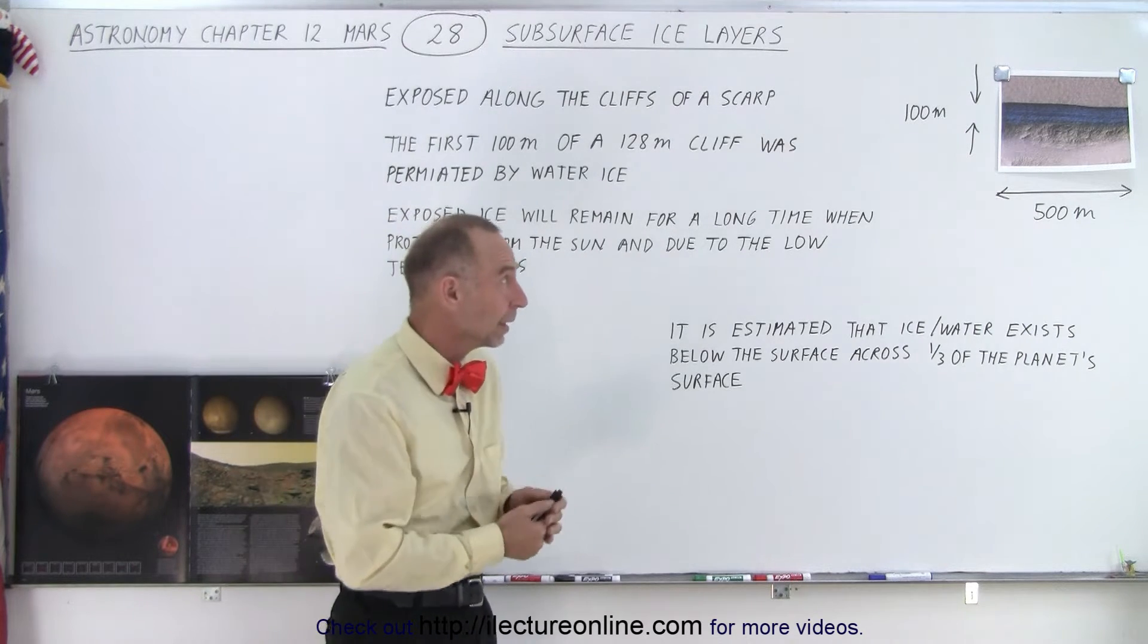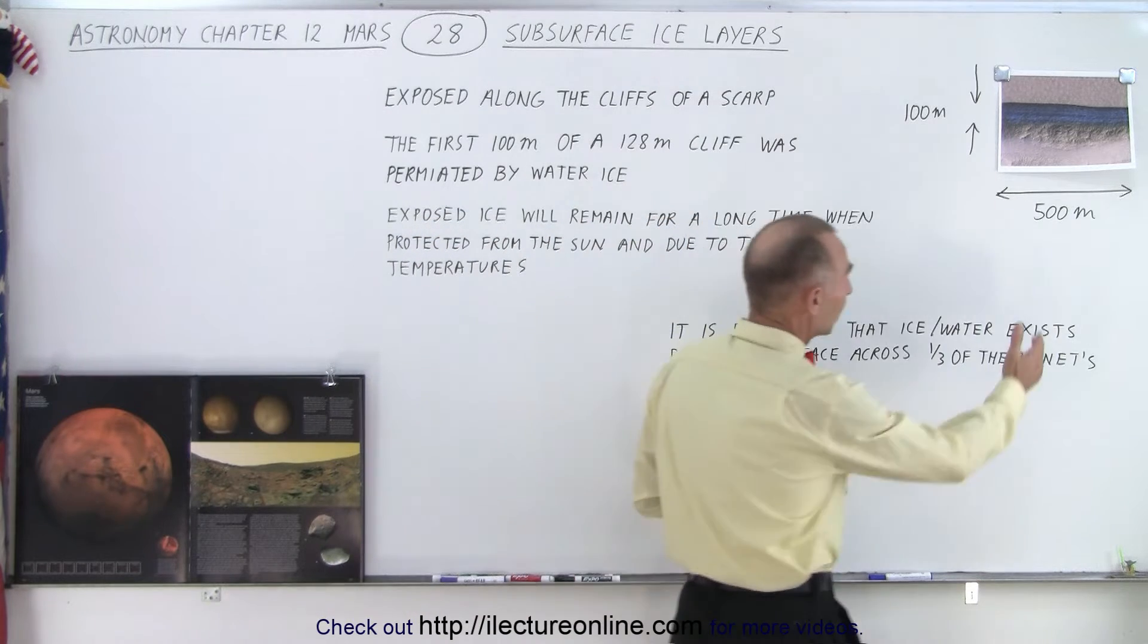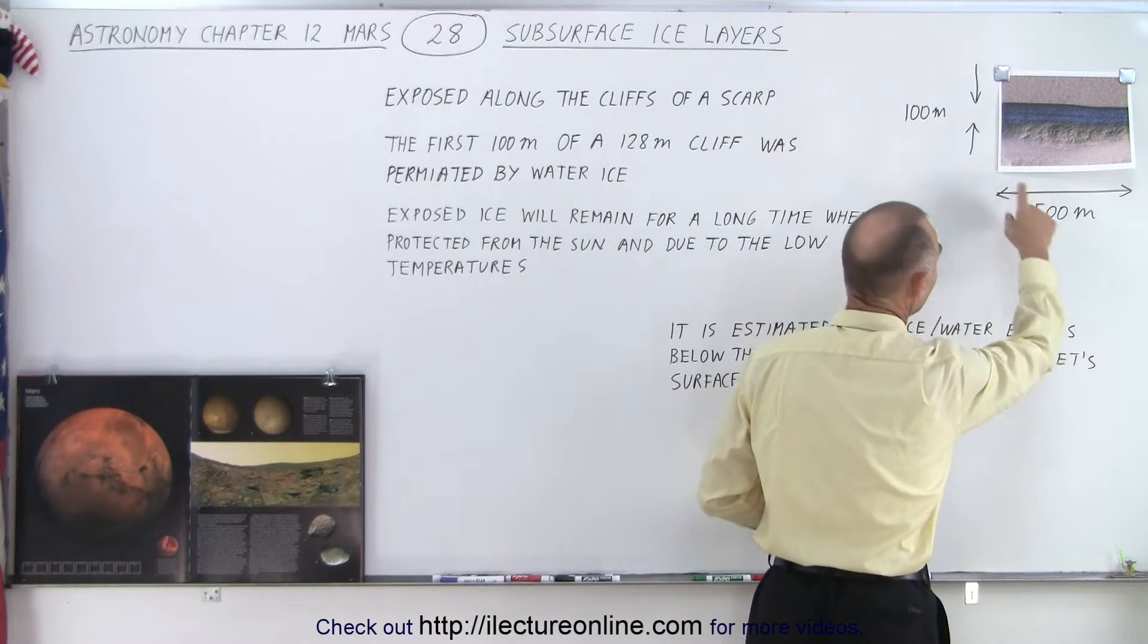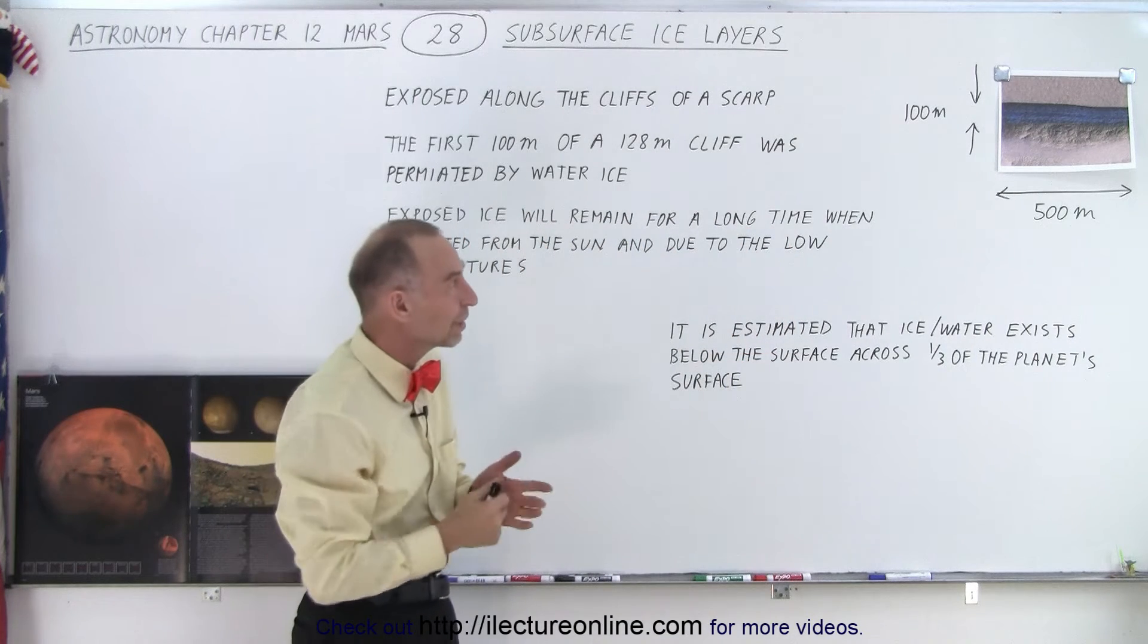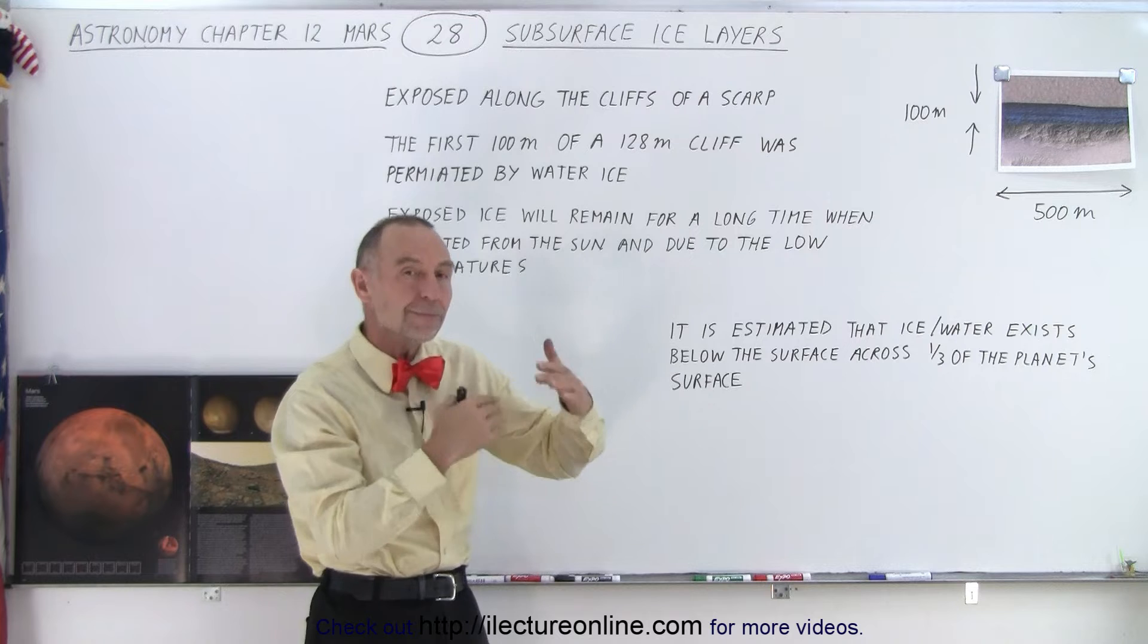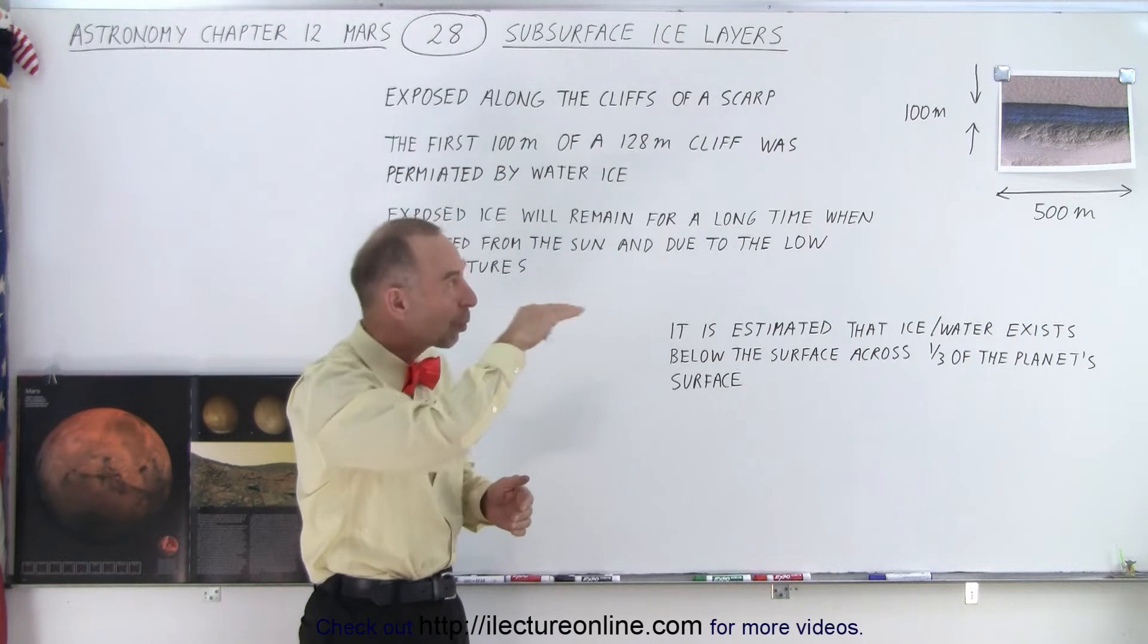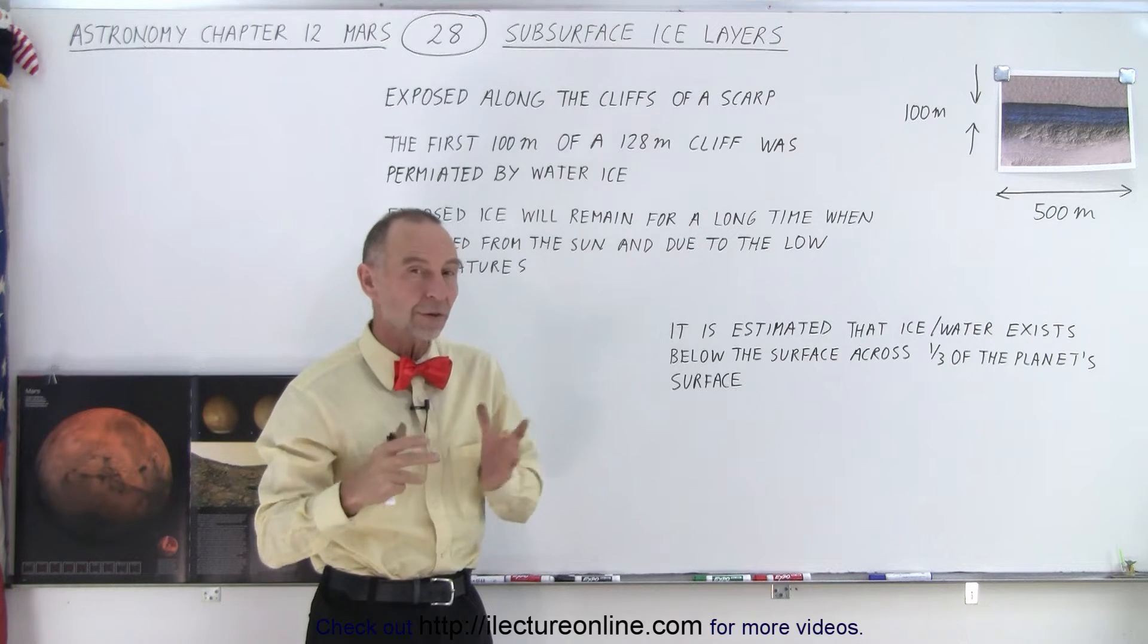Now on this particular scarp, the dimensions of the picture is about 500 meters, a half kilometer wide. The cliff side is about 128 meters tall, which is about 400 feet tall, and for the first hundred meters we found that it was permeated by a lot of water ice.